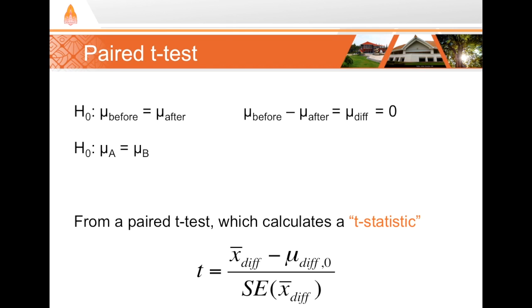For a two sample paired t-test, our null hypothesis would be one of these two forms. If it's a before and after study, then our null hypothesis is that the mean value before is the same as after the intervention. Or if we're comparing methods, then we would say that the mean score of method A is the same as the mean score that we get from method B.